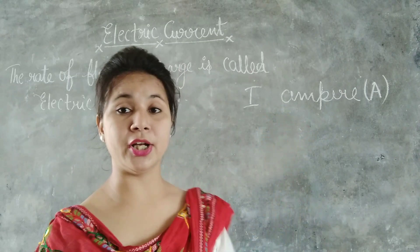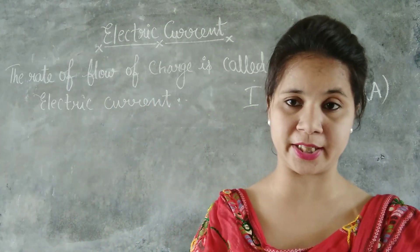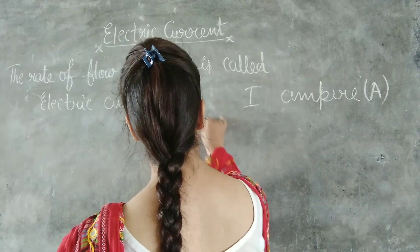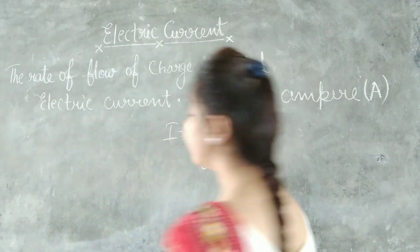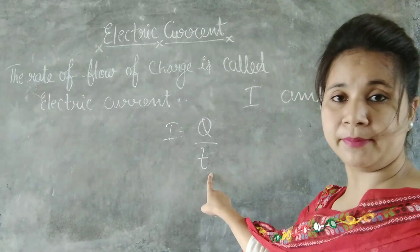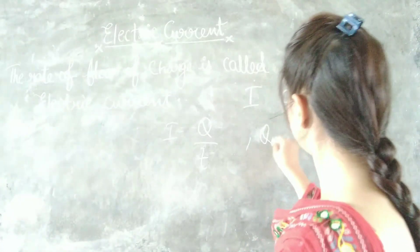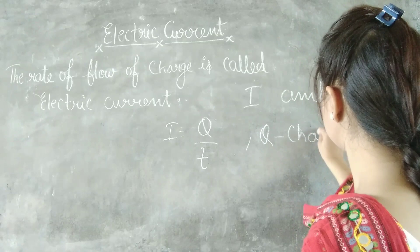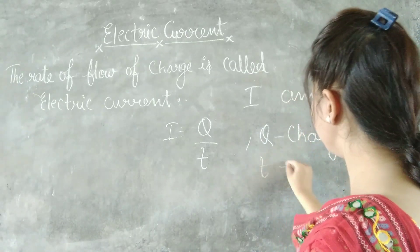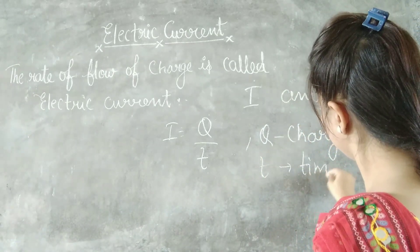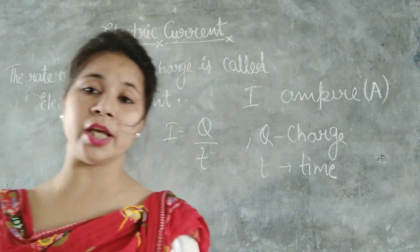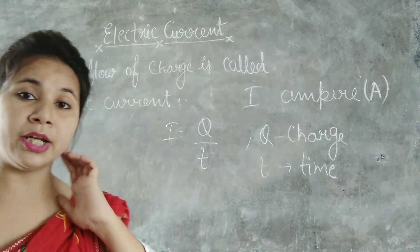The formula of electric current is: I is equal to Q upon T. Here Q means charge and T means the time taken by the electrons to pass through our area of cross section.